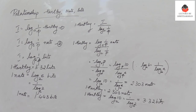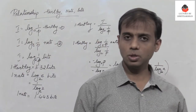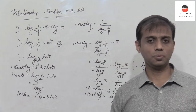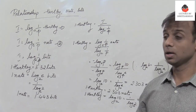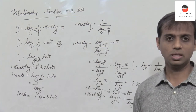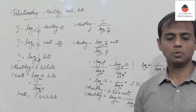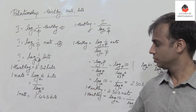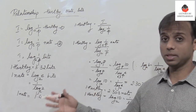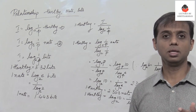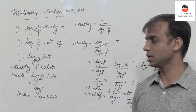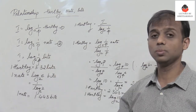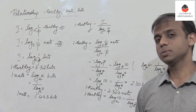This is how we find the relationships between Hartley and Nats, Hartley and bits, and Nats and bits. In most problems — whether finding entropy or self-information — we use log to base 2 as the general standard, because we need the measure of information in bits.